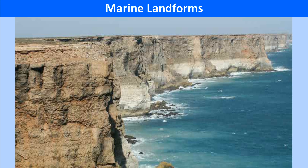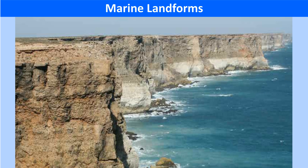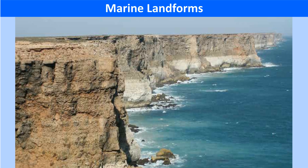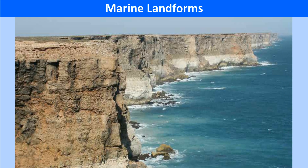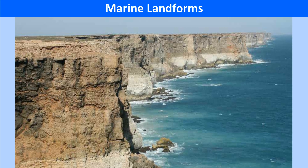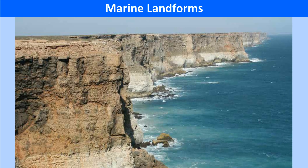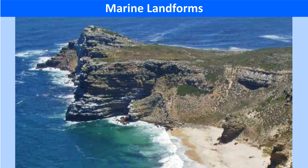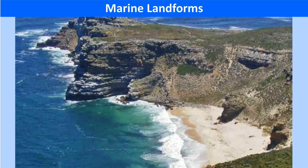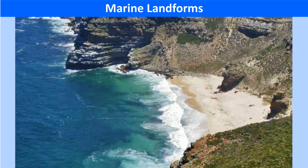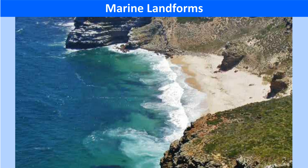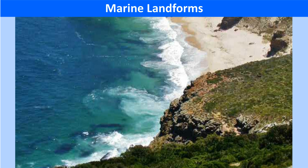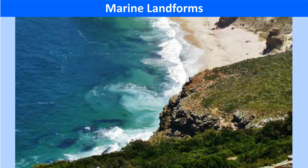On the coasts with alternate bands of hard and soft rocks, the softer ones are eroded by waves to form bays — areas of water surrounded by land — and the harder rocks remain as headlands or caves. For example, the Cape of Good Hope in Africa. Capes are formed when the headlands are eroded back over a period of time and are further eroded to form arches, which eventually collapse and form island stacks and stumps.